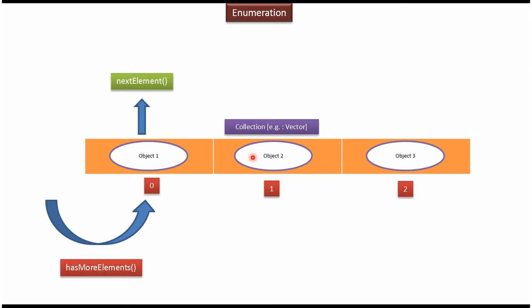Suppose if you want to get the next object, then call the hashMoreElements. This method will return true. Using nextElement method, we can get object 2.